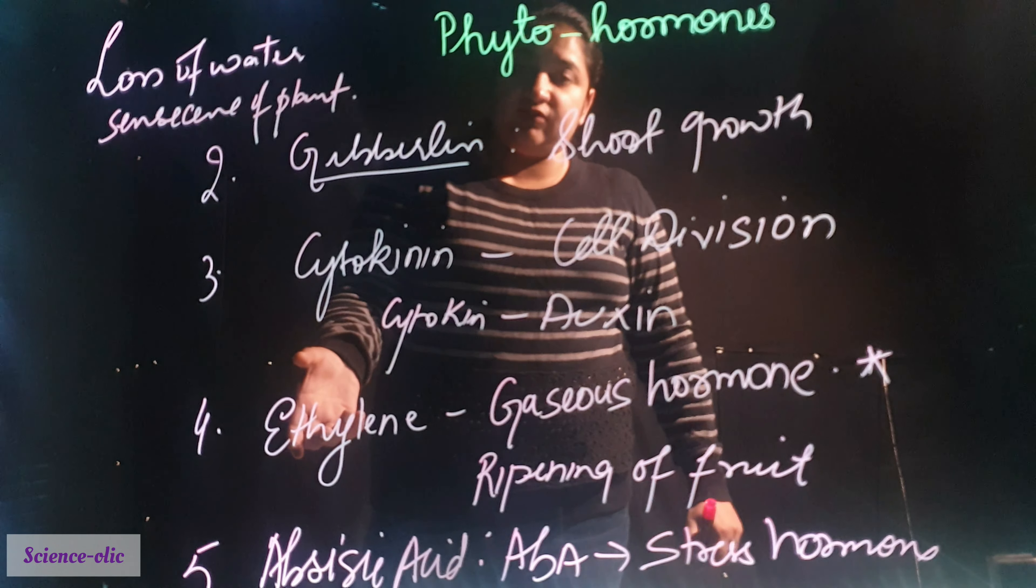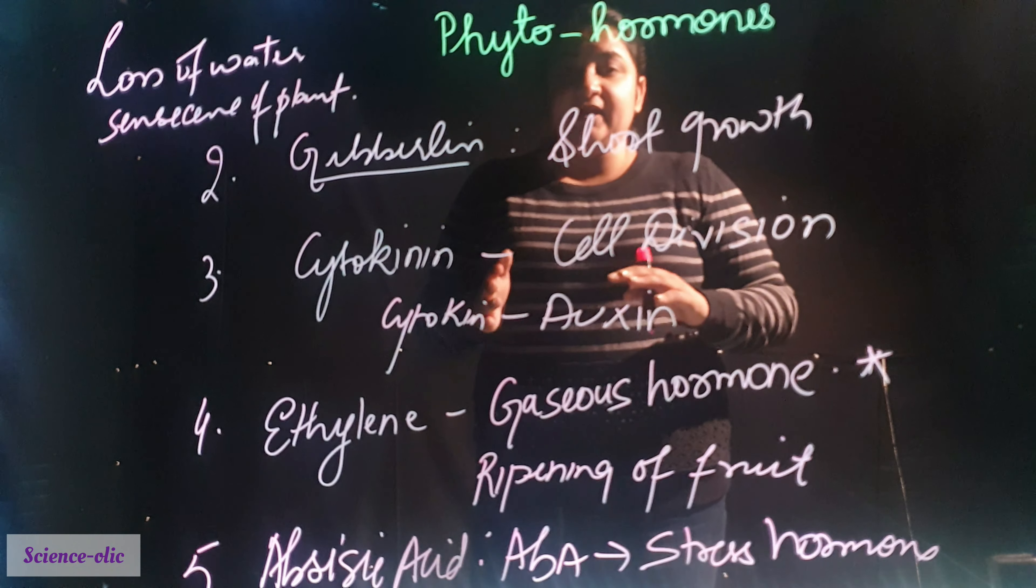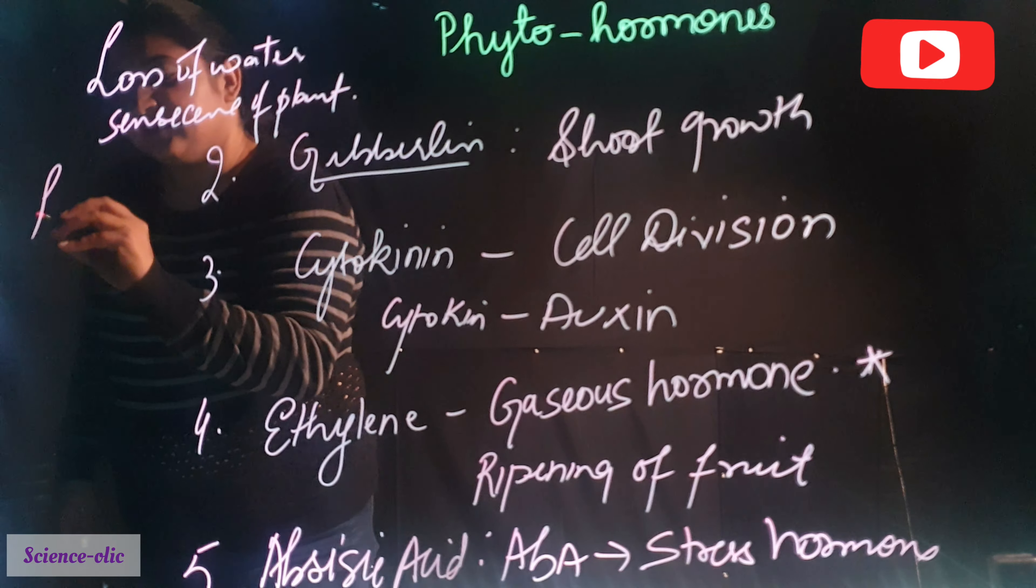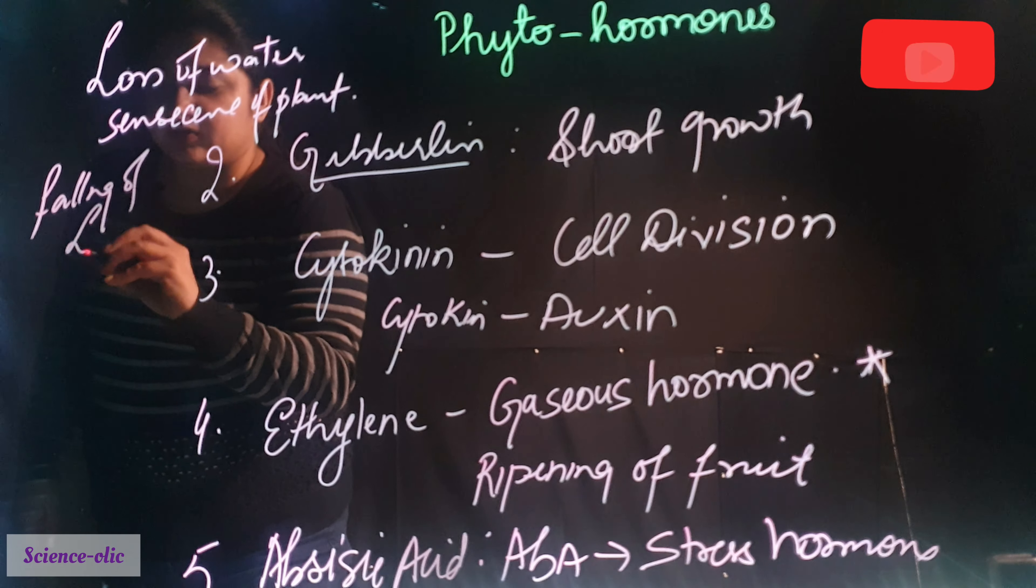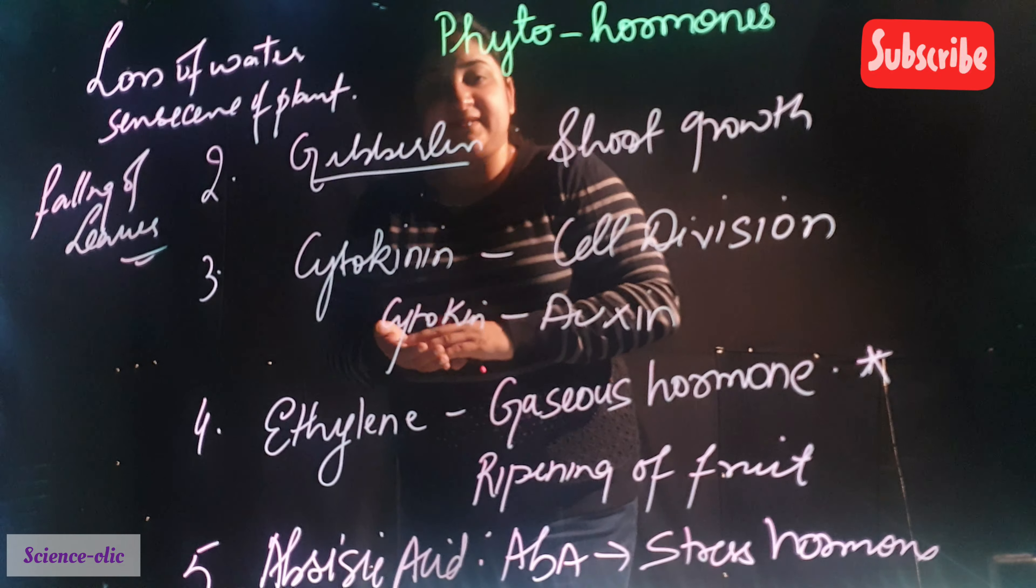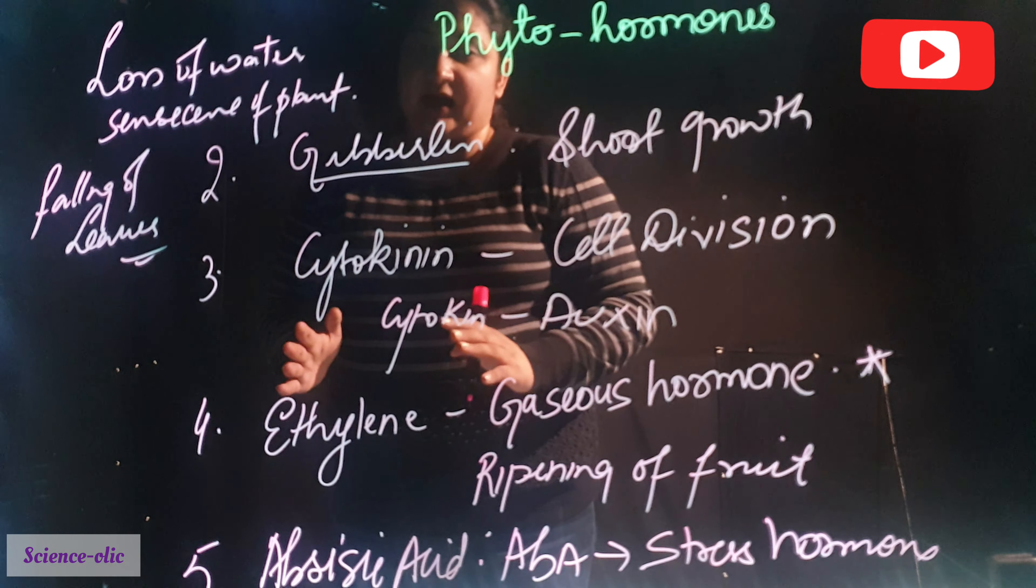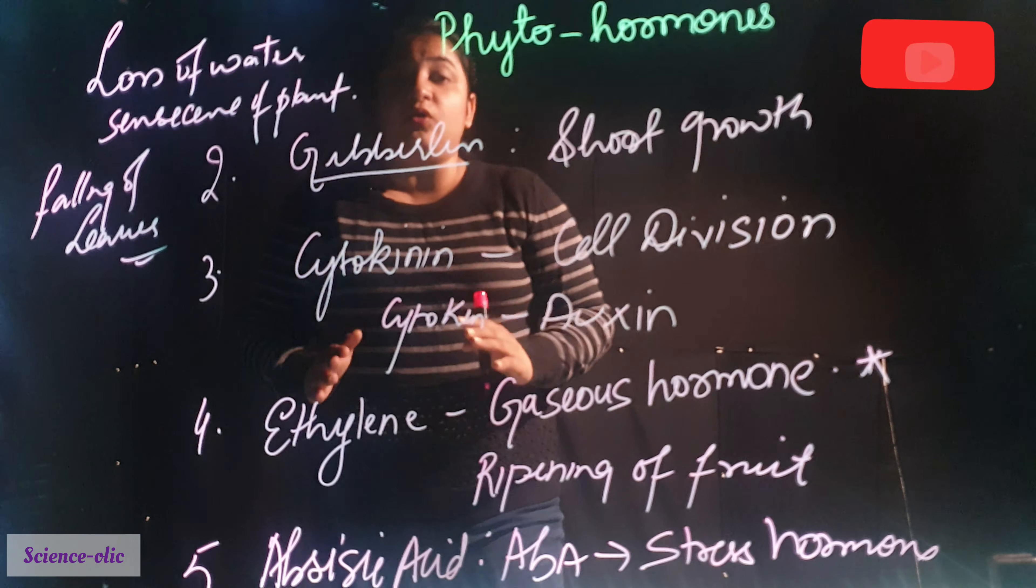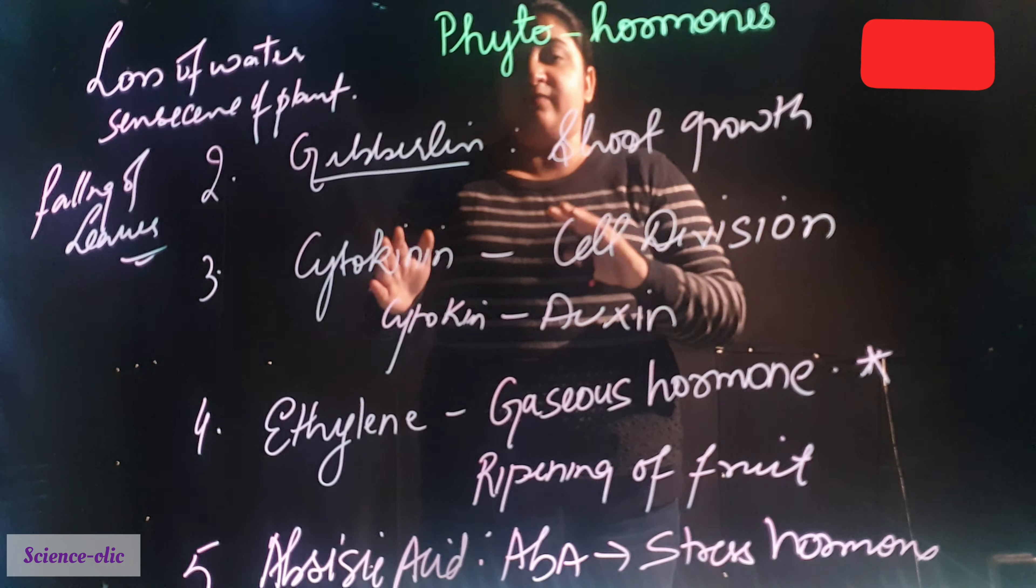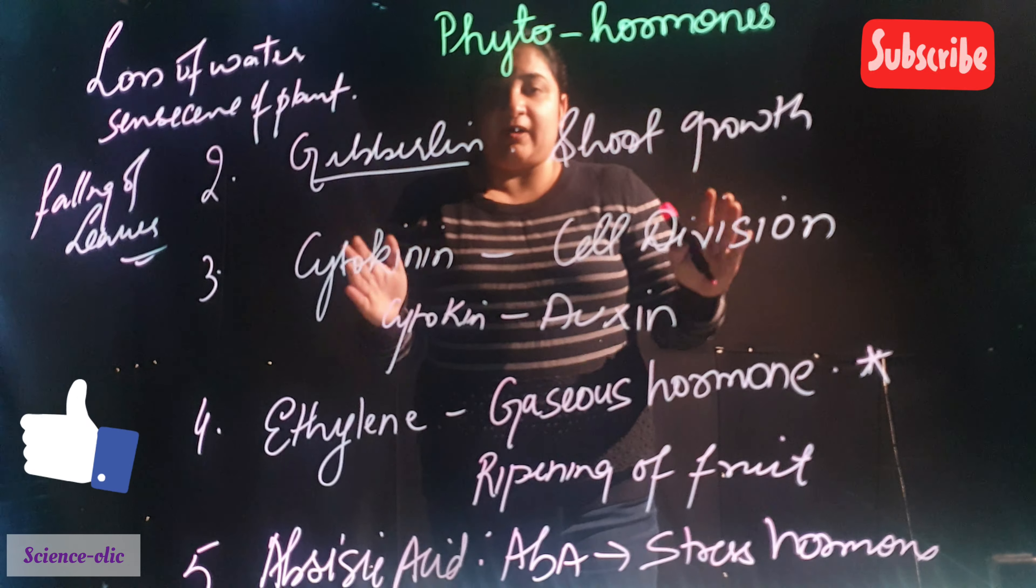Ethylene also helps in aging of plants. Abscisic also helps to drop the leaves from the tree. Like leaves which get mature fall on the ground, falling of the leaves is also function of abscisic acid. So basically auxin, gibberlin, cytokinin and ethylene are growth hormones. And this abscisic is growth inhibitor hormone. This abscisic acid opposes all the functions done by the other hormones or phytohormones. This is all about the phytohormones.